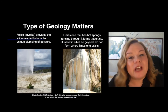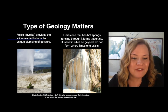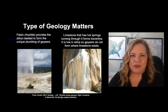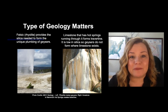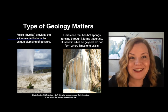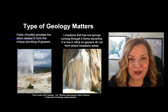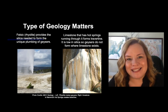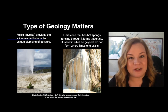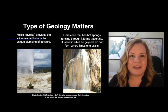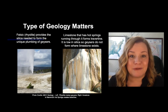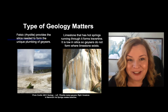The geology type matters. On the left you see the upper geyser basin of Yellowstone, very rich in high silica rhyolitic rock deposits made from a mega colossal eruption about 640,000 years ago. The felsic material is super high in silica, which facilitates the formation of geyserite — creating the right mechanism for unique plumbing — which is why we get geysers there.